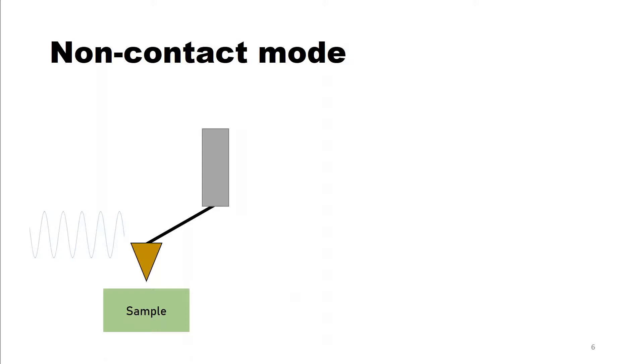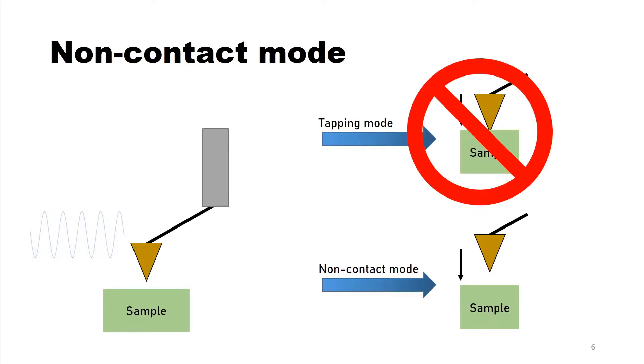In non-contact mode the probe is also oscillating and amplitude is detected. And contrary to tapping mode the probe does not touch the surface though. The advantage over tapping mode is an extended probe lifetime.